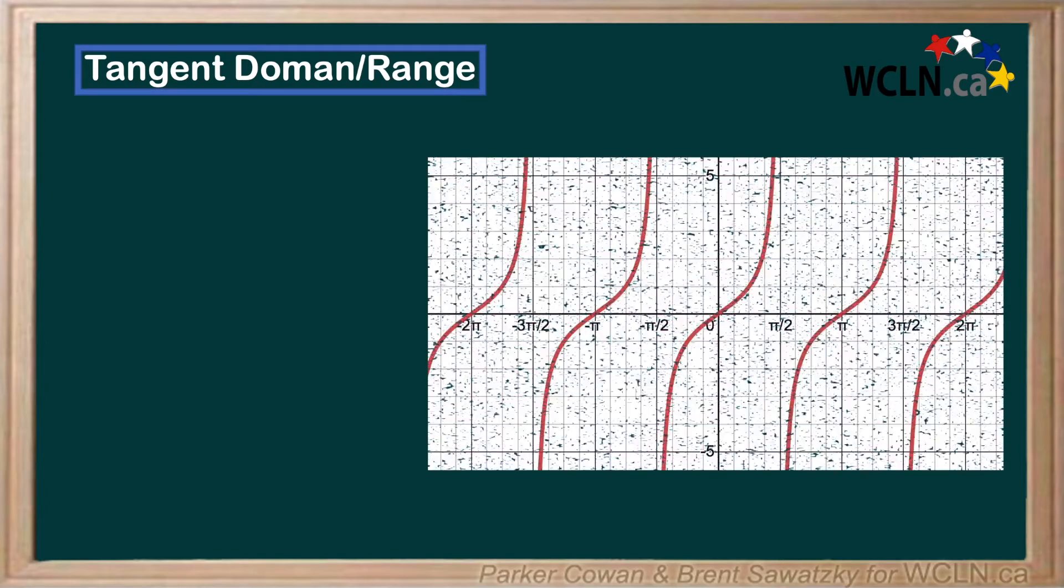Using our findings from the last video, we can say that the tangent curve has a domain of all real numbers, except for those that fall on the asymptotes. Or mathematically, we can say x∈ℝ except for π/2 + πn, where n is an integer.